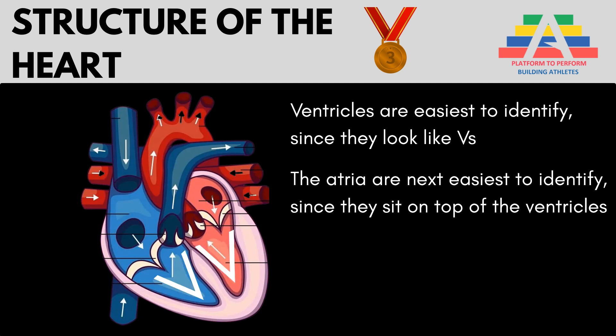The atria only have to pump blood into the ventricles, so they're more of a passageway whereas the ventricles act like a pump. The atria are the second easiest structure to identify because — as A sits on top of V — the atria sit on top of the ventricles. Note that atria is the plural of atrium: we say 'atria' when referring to both, but 'left atrium' or 'right atrium' when referring to each individually.